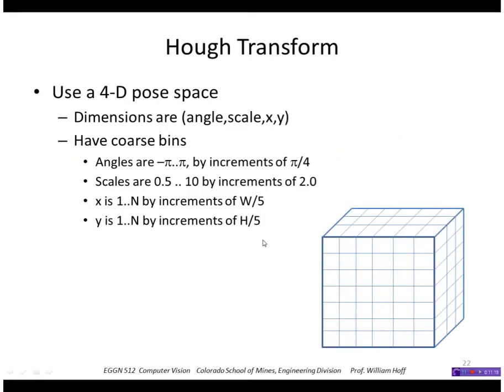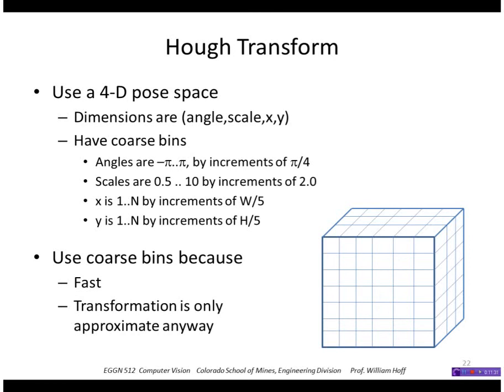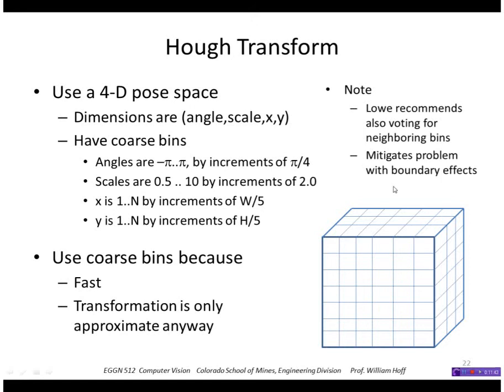Okay, so now we want to find those clusters. We can use a Hough transform - it's actually 4D, remember. We're going to make it very coarse, as you can see here, and that's okay because it's just an approximation to the transformation anyway. Note that Lowe recommends also voting for neighboring bins to mitigate boundary effects where votes are split between two adjacent bins.